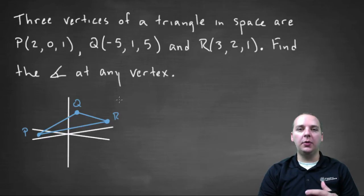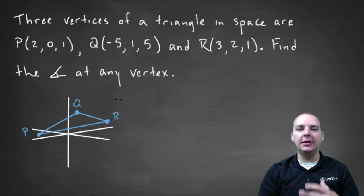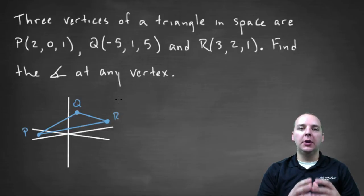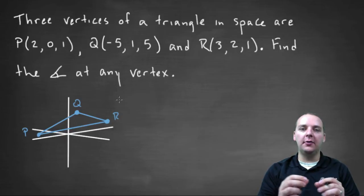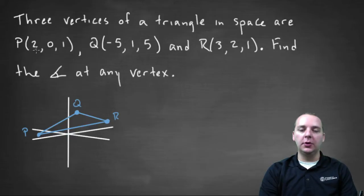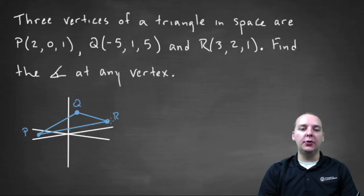One exercise that we see a lot when dealing with dot products is this application-type problem where they'll give us three points either in a plane or in space, and say that these three points create the vertices of a triangle. In this exercise we have points P, Q, and R, which are the points (2,0,1), (-5,1,5), and (3,2,1), and they create this triangle here in space.